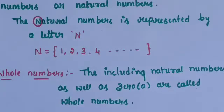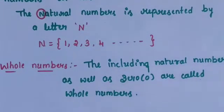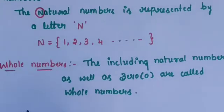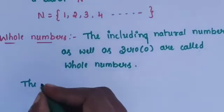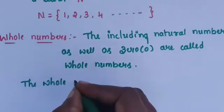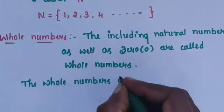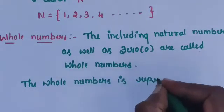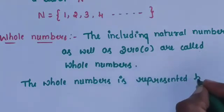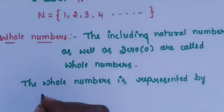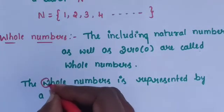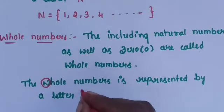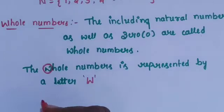The whole number is represented by a letter. The whole number's first letter is W, represented by the letter W.